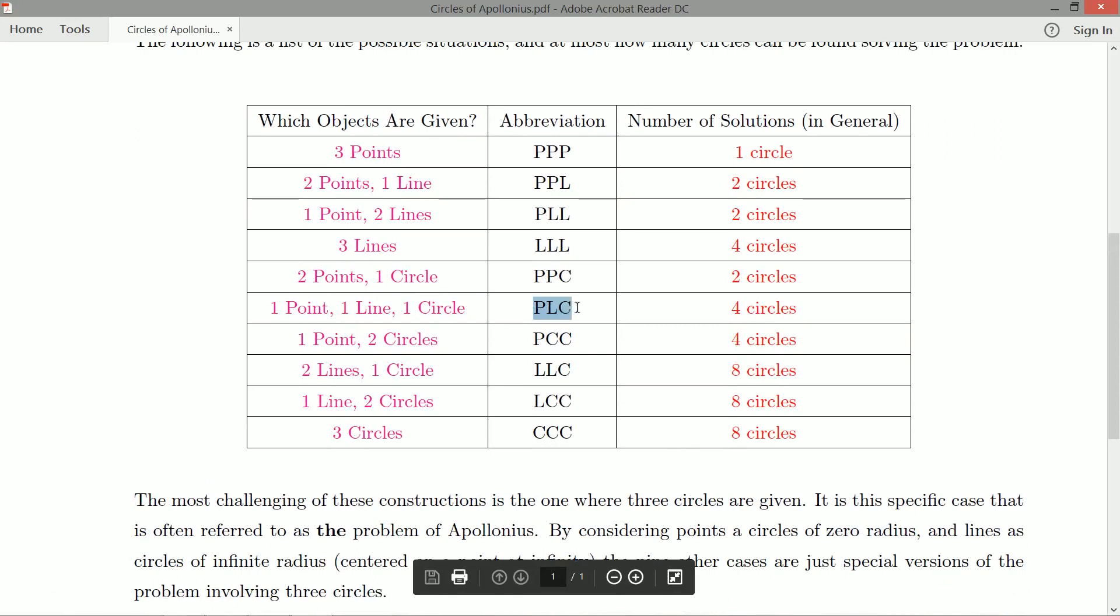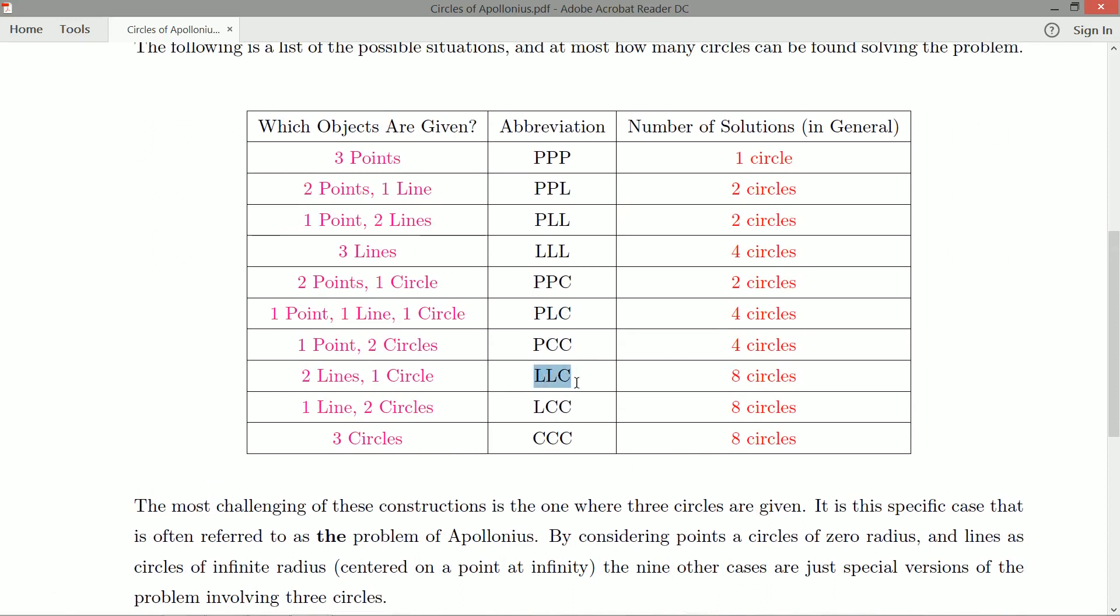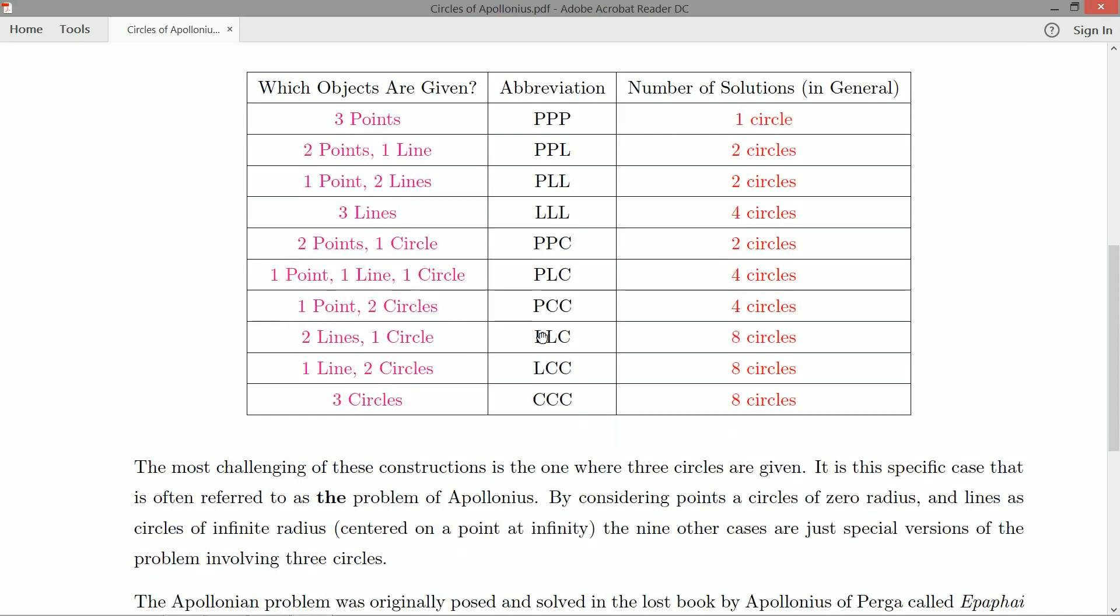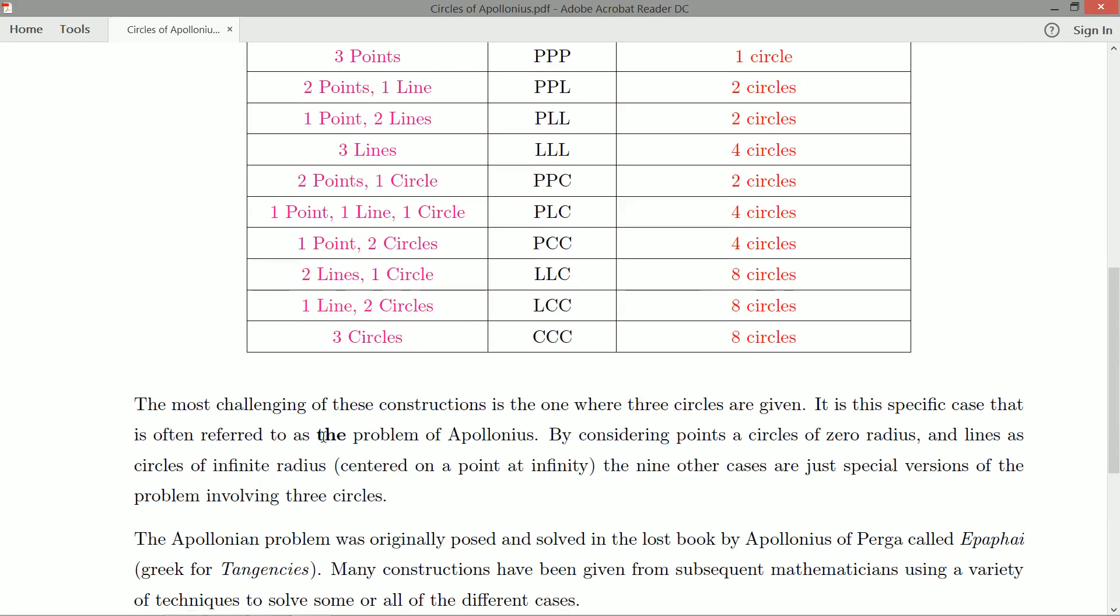But point line circle is just, you're given three circles, one of them has zero radius, one of them has infinite radius, and one of them just has some finite radius. Line line circle? Well, that's just the special case where you have three circles, but you know something extra about the problem, that two of the circles have infinite radius. So in that sense, the other nine are called limiting cases of the problem of Apollonius, or special cases.